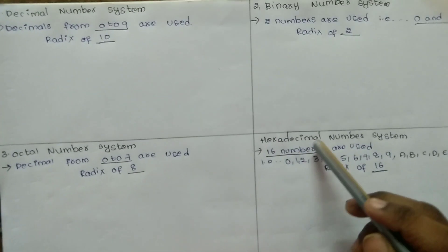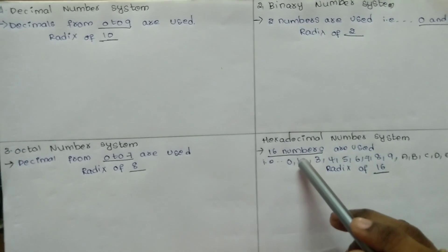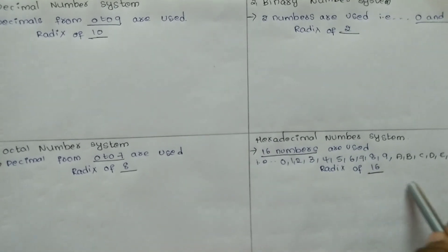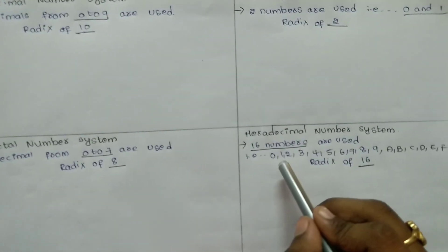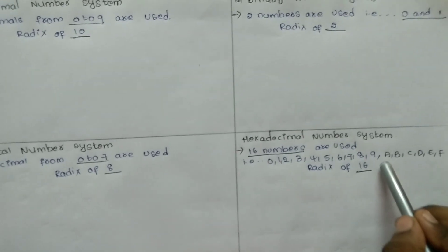And Hexadecimal number system uses 16 numbers. The radix or suffix is 16, and the 16 numbers are 0 to 9, and A to F.